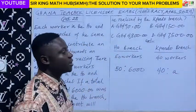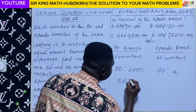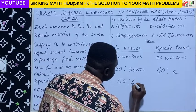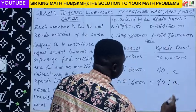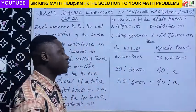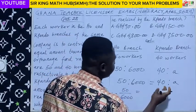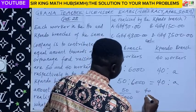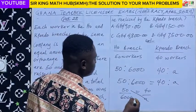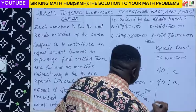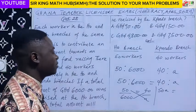Since it's a direct proportion, we can set up an equation. So 50 is to 6,000 must be equal to 40 is to A. Now 50 is to 6,000 can also be written as 50 over 6,000, and 40 is to A can also be written as 40 over A. At this point, we can cross multiply. So we have 50 times A, giving us 50A, and then 6,000 times 40.